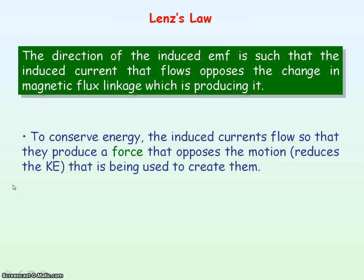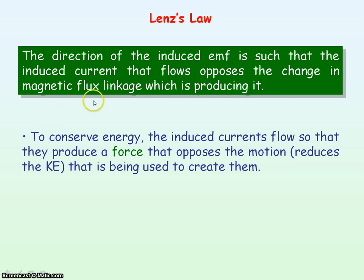So in order to conserve energy, the induced currents must flow in a direction that they produce a force that opposes the motion, and so reduces the kinetic energy in order to create the electrical energy. We need motion in order to get a change in magnetic flux linkage which will induce an EMF, but we need to reduce the motion and the kinetic energy in order to conserve energy. So the induced EMF has to flow in a direction to oppose that motion and oppose the change in magnetic flux linkage.